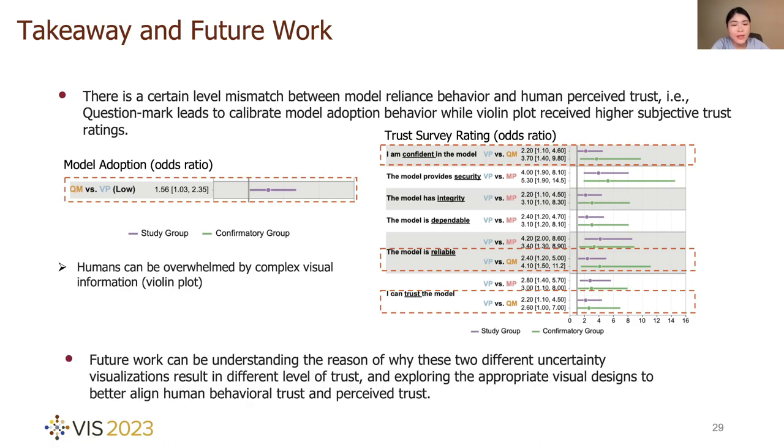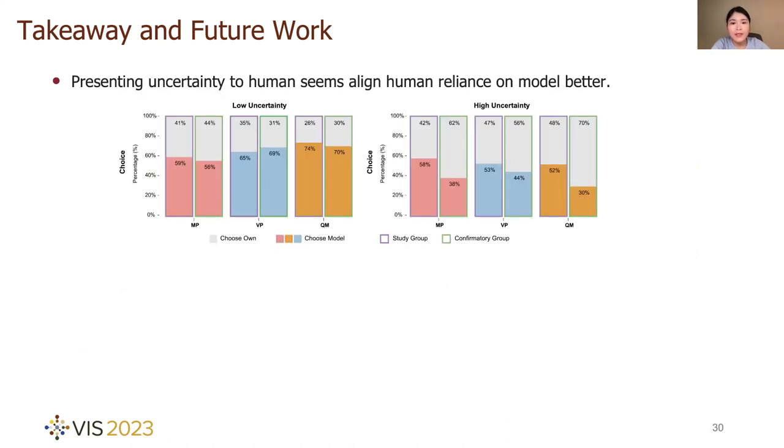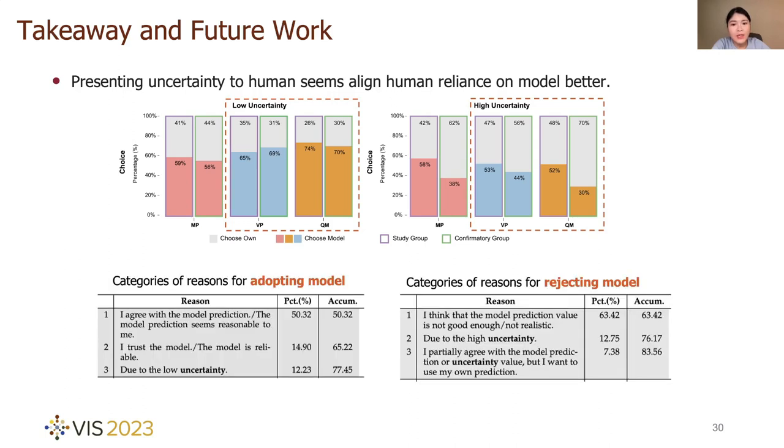Future work can be understanding the reason why these two different uncertainty visualizations result in different levels of trust, and exploring the appropriate visual design to better align human behavior trust and perceived trust. Presenting uncertainty seems to help align human reliance on model better. Compared to model-only visualization, both uncertainty visualizations promote adopt model in low uncertainty tasks, while reject model in high uncertainty tasks. Our collected reason of human choice also shows that humans can recognize the uncertainty level through our uncertainty visualization, and the visualization can help them make wise choices based on the uncertainty level.